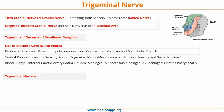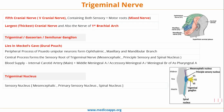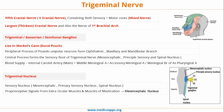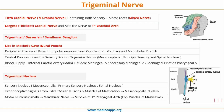Looking at the trigeminal nucleus in the pons, there are three components: mesencephalic, primary sensory, and spinal nucleus. The diagram shows V1, V2, and V3 ending up in the trigeminal ganglion, and from there fibers project to form the mesencephalic nucleus, the principal sensory nucleus, and the spinal nucleus in the pons. Proprioceptive signals from the extraocular muscles and the muscles of mastication via the trigeminal ganglion end up in the mesencephalic nucleus. The motor nucleus, which is very small, supplies the muscles of the first pharyngeal arch — especially the muscles of mastication — via the mandibular nerve.